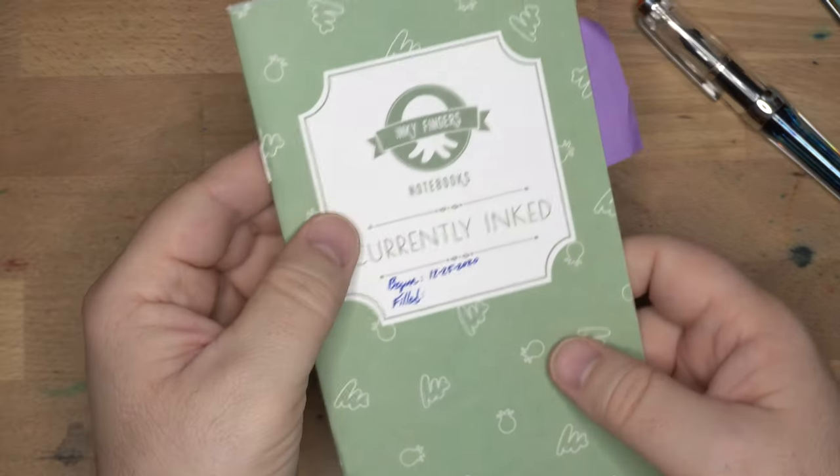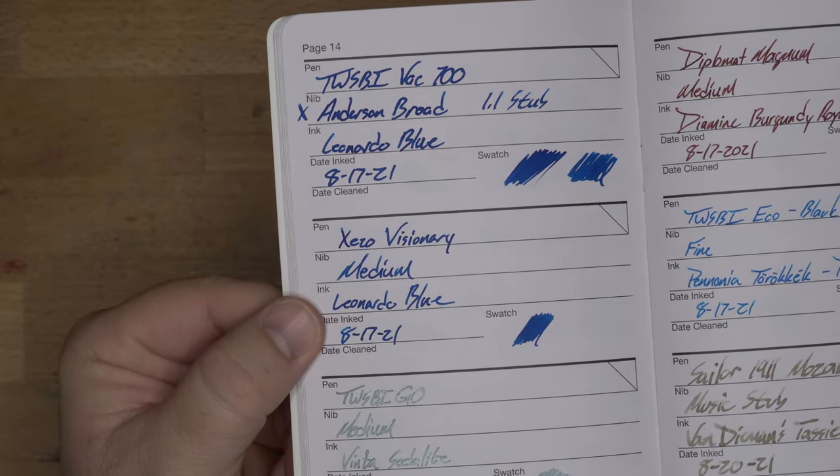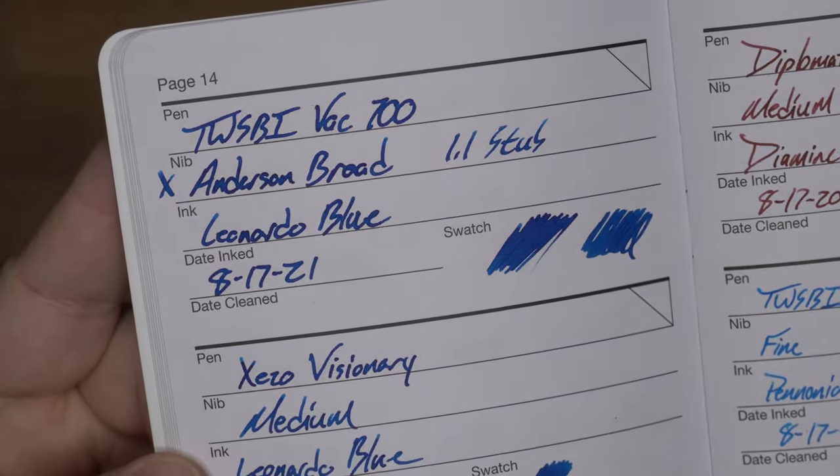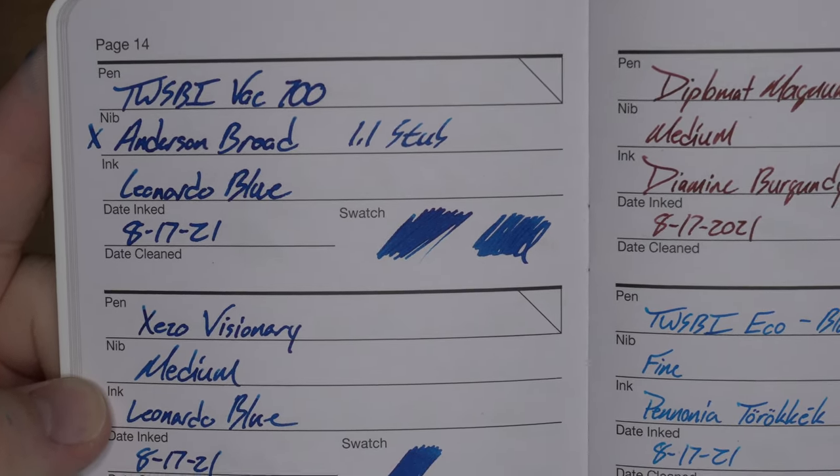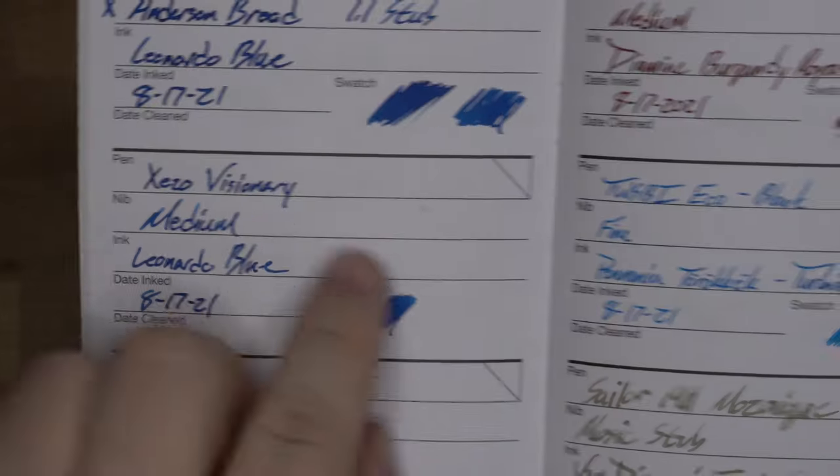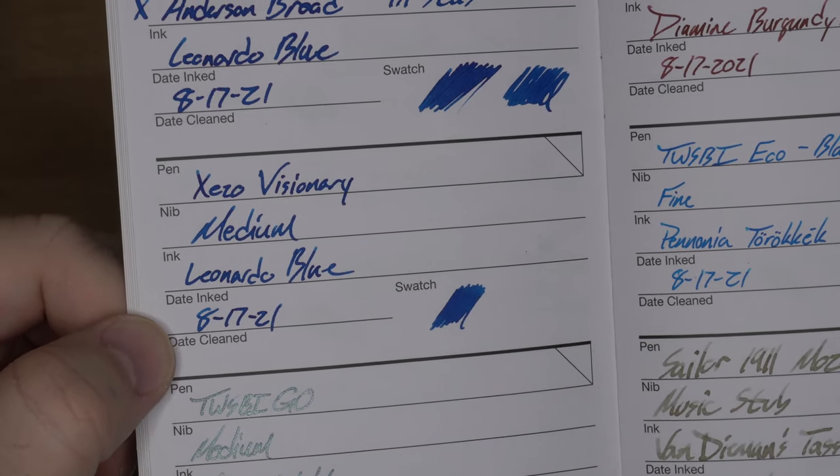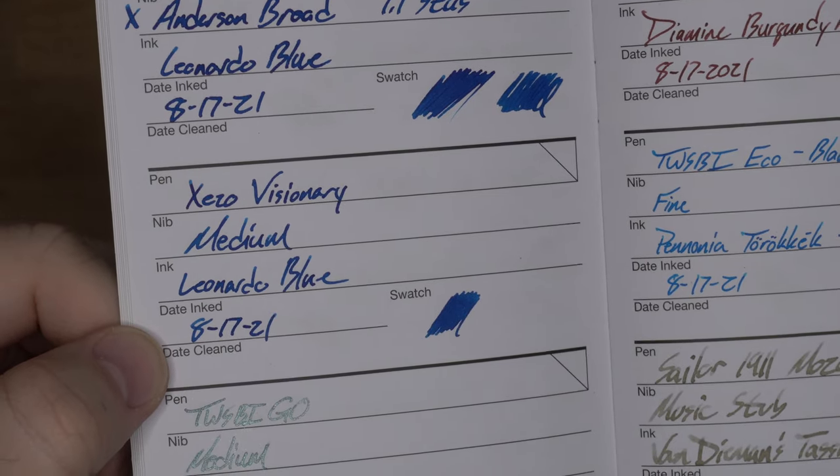Better papers. We have the Inky Fingers Notebook. This is Wheat Straw paper. There are our two samples here on this Wheat Straw paper. The Anderson Broad, nope, took that out. Look how much ink that was putting down. So much. The stub looks pretty dark as well, but you can definitely see a little bit of shading. It's not just blasting out of there. And then, the Zizo Visionary here, which I think looks really nice on this paper. You get some of that shading. You get a little bit of sheen. It looks real good when it isn't just soaking into the paper.